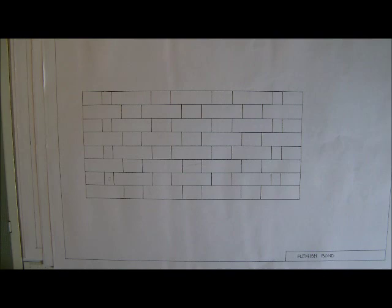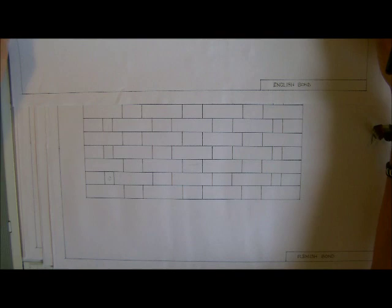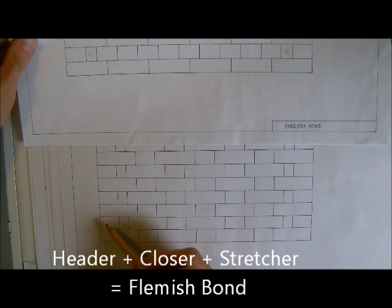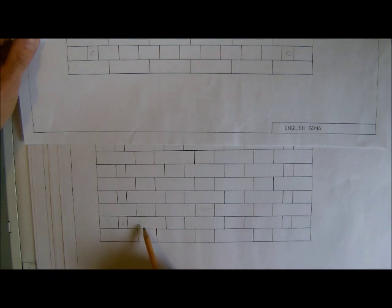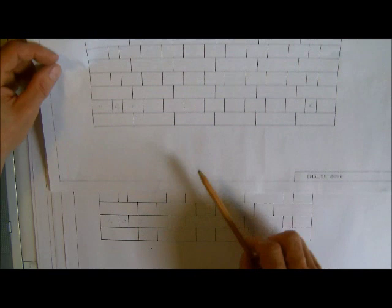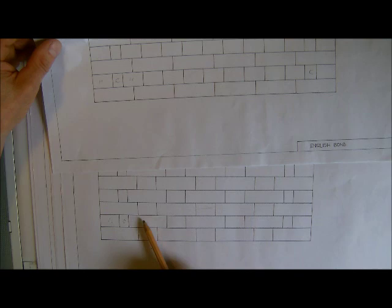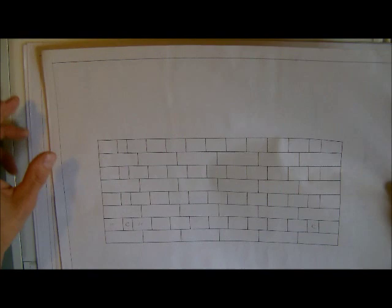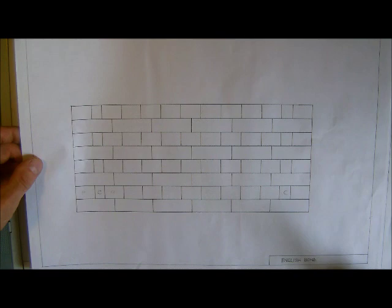If we do a quick comparison to identify these bonds: where you see header, closure, then a stretcher, you know it's going to be Flemish Bond. Where you have header, closure, and then a header, you know that's going to be English Bond. The variations of English Bond will keep that arrangement and the variations of Flemish Bond will keep their arrangement as well. So the first three bricks you see will identify the nature of that wall. We're going to look at variations of English Bond first, then variations of Flemish Bond.